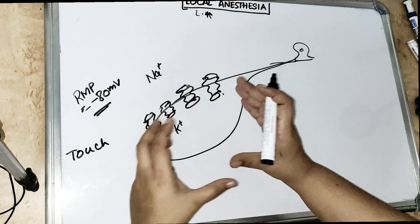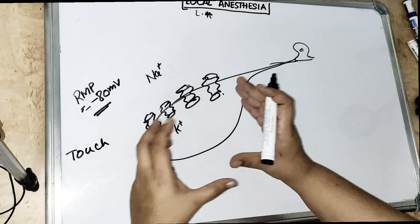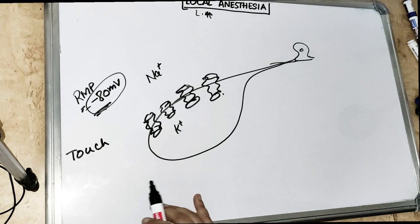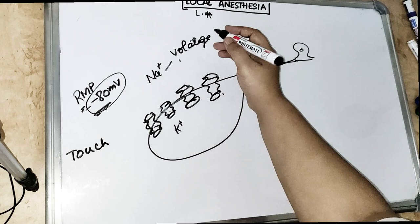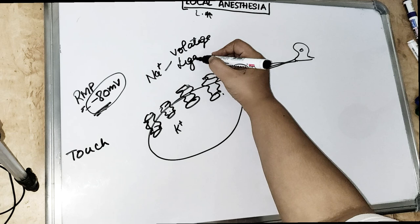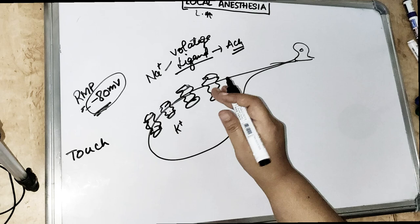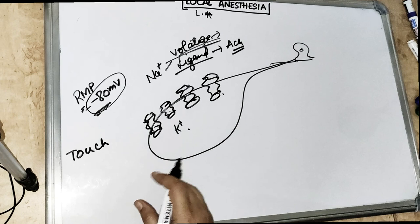We have two kinds of channels. One are the voltage gated channels, another are the ligand channels — which we have covered in physio and you can find in the playlist. Ligand gated channels are basically the channels which open by acetylcholine, by neurotransmitters. Voltage gated channels are due to the electrochemical gradient.